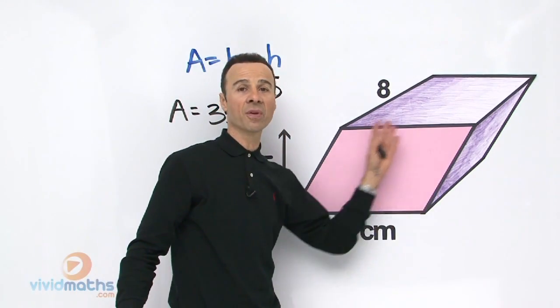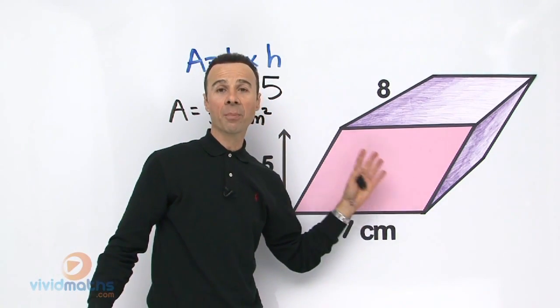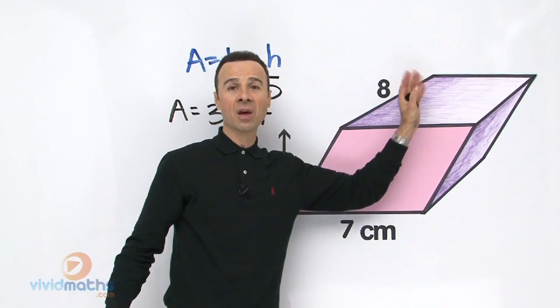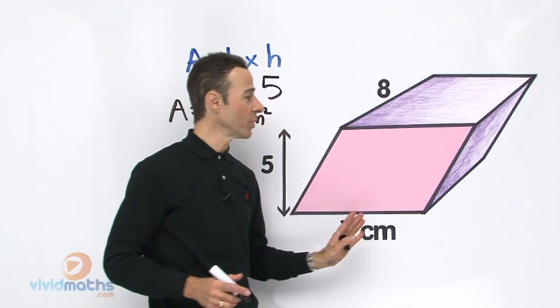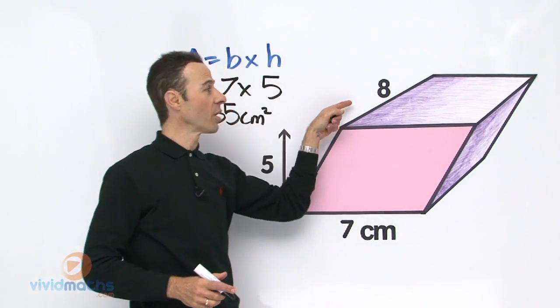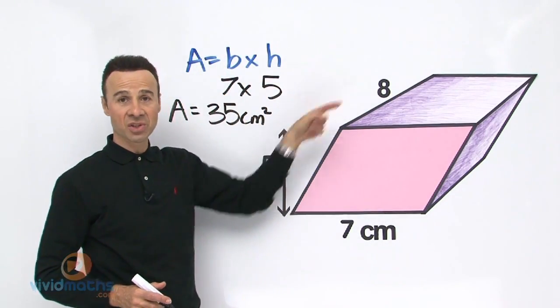So we have our pink area of the face of this little parallelogram. Now we are going to get the depth so we can find how much capacity and volume it has within it. So what we need to do is multiply by the depth here, and it is shown right over here as 8, as you can see right over there.